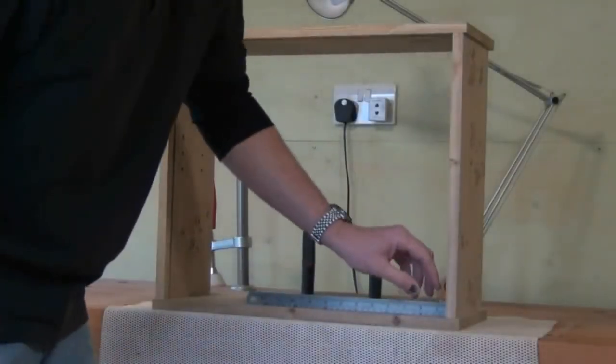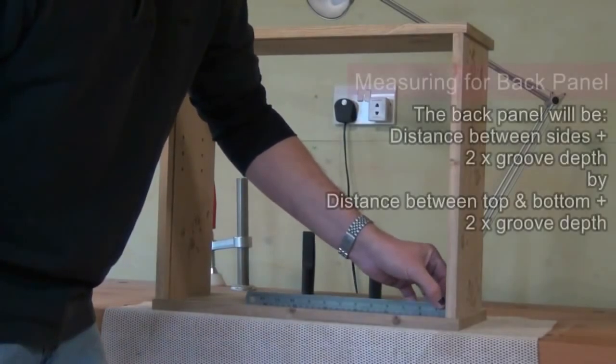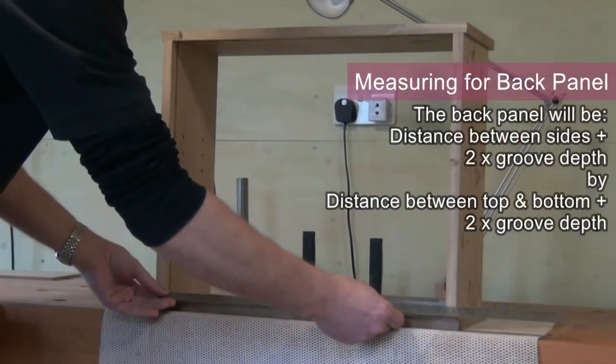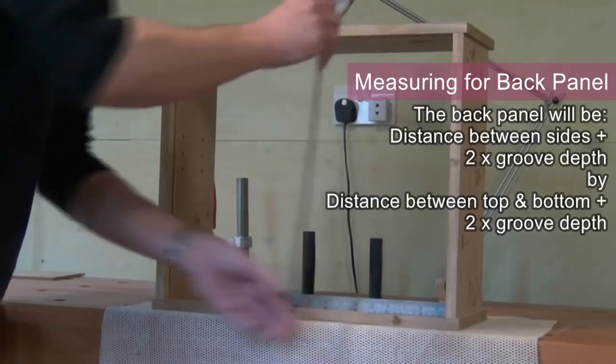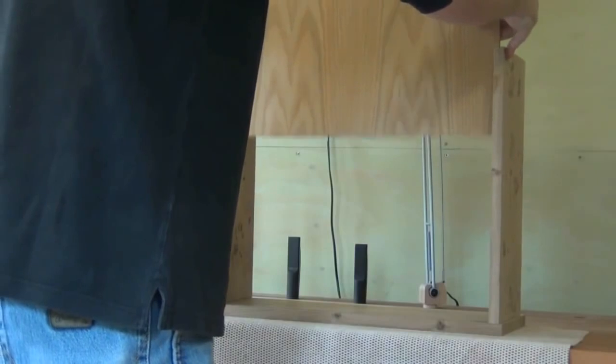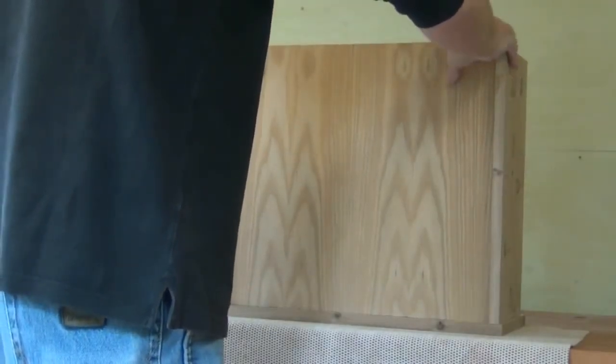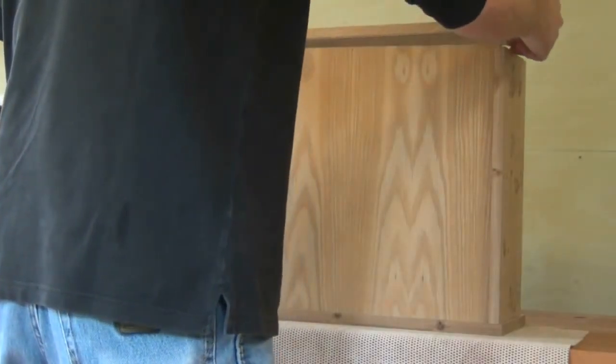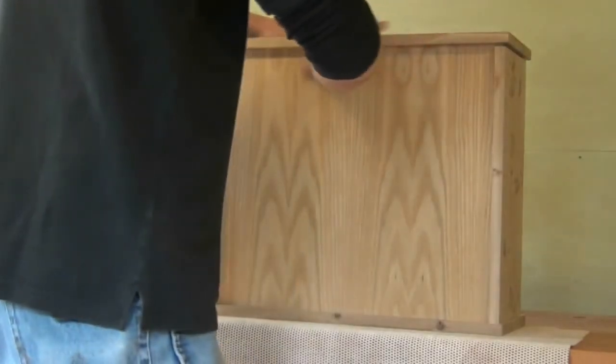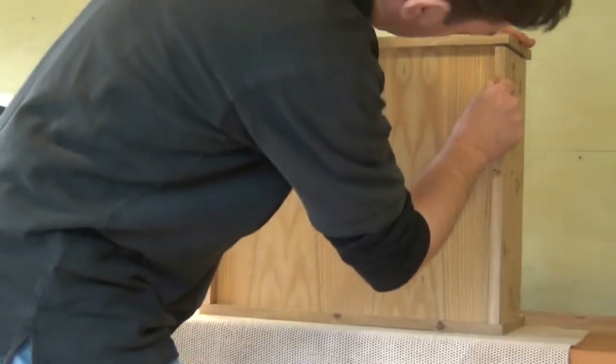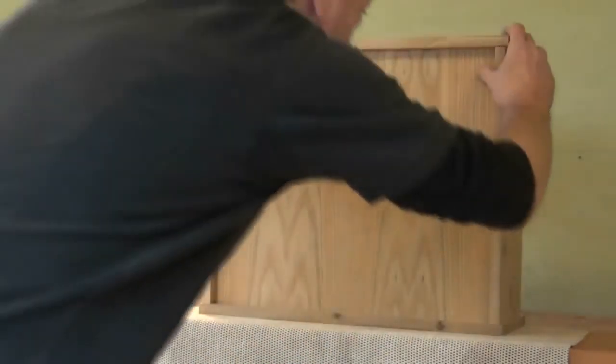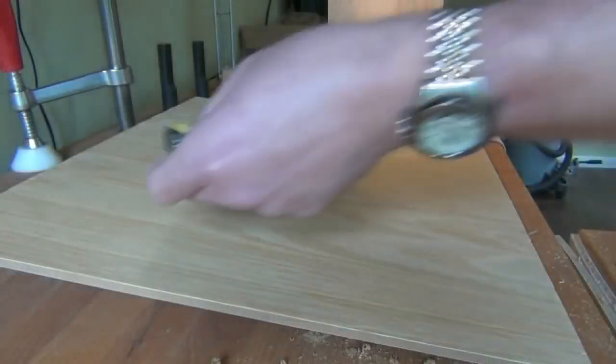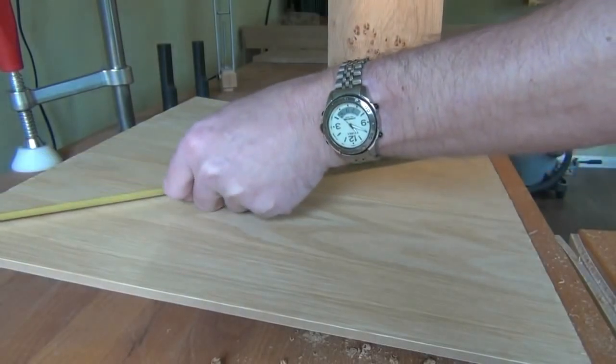To measure for the back we first measure the depth of the slots. And we need to add twice that measurement to the measurements we now take between the two sides and between the top and the bottom. That will give us the total size of the back we need. That's a perfect fit side to side. And that's just a little bit snug from top to bottom. So we'll take a little bit off the top. As I fit the back I want to keep checking the diagonals to make sure I keep it square.